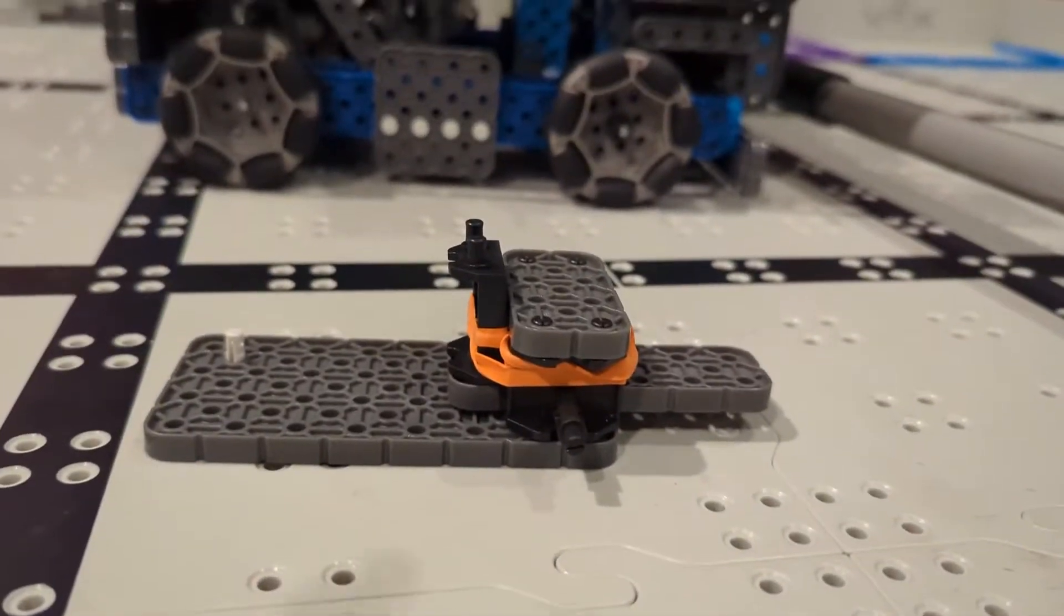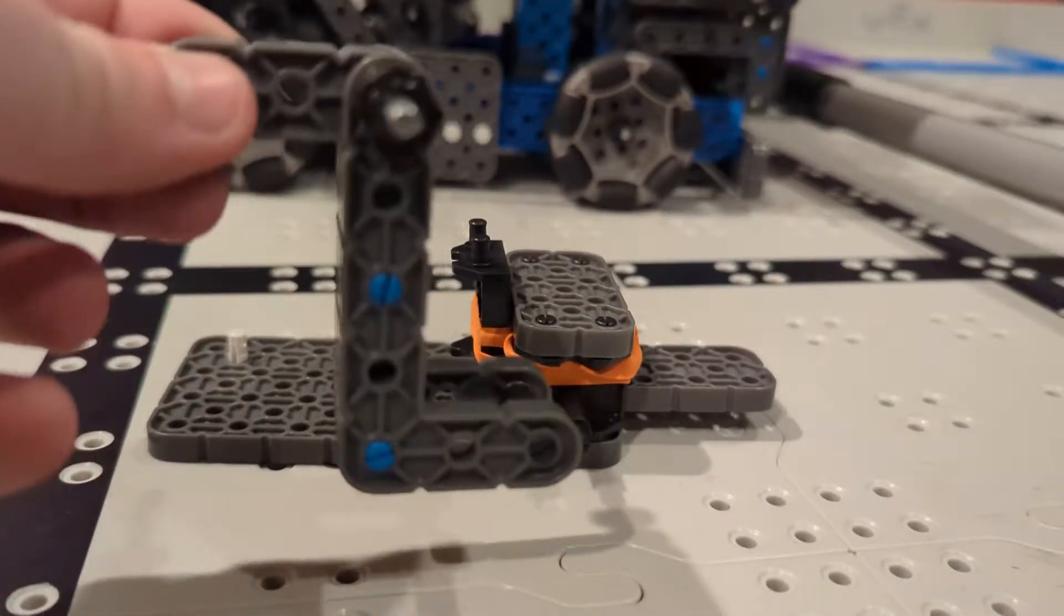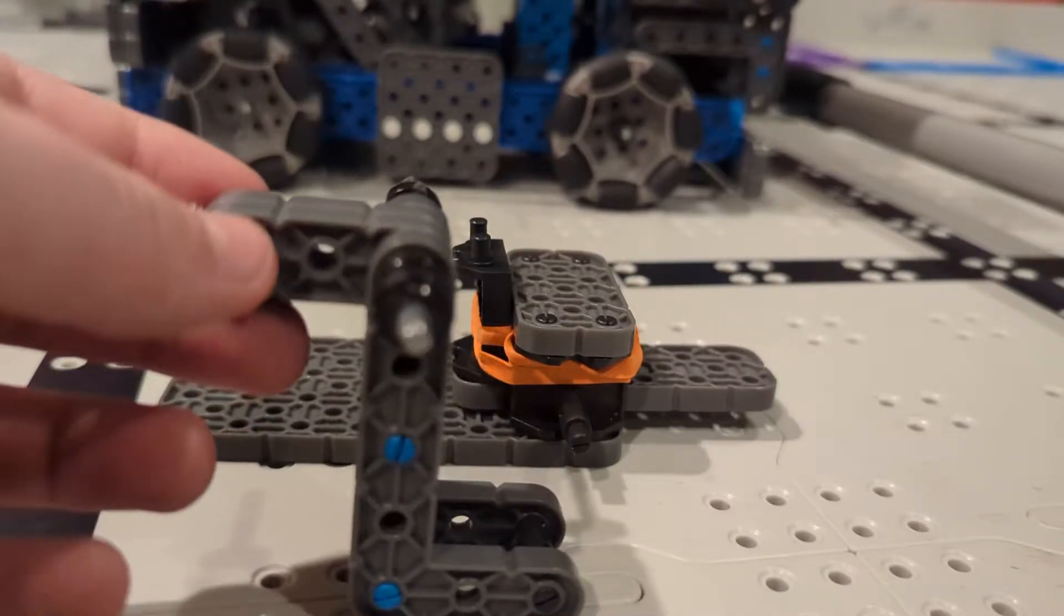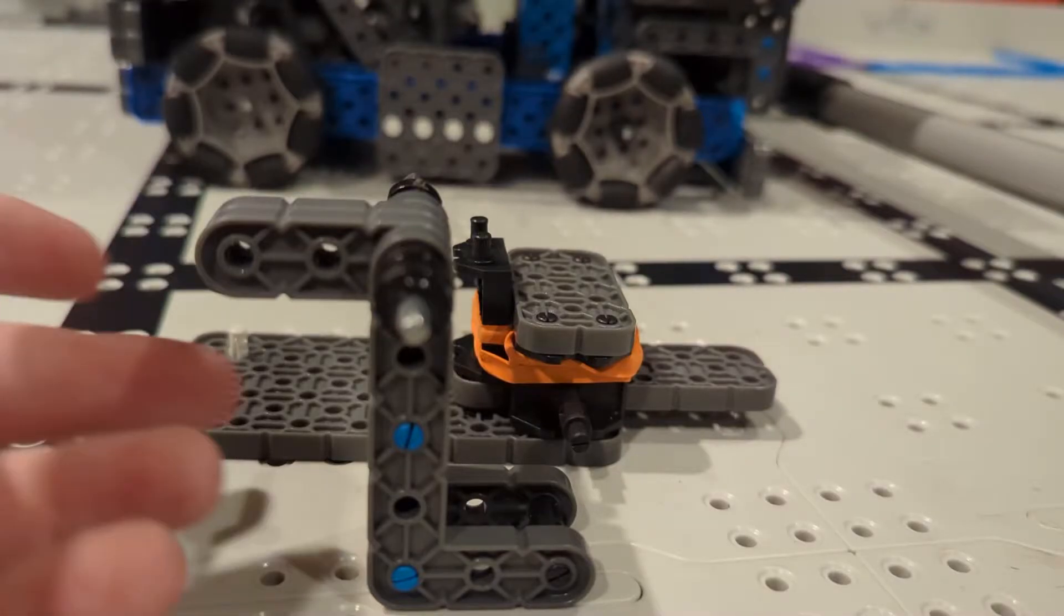So the problem with our old one, which looked like this—we have a video on it if you want to see it—was that it was very slow and pretty inconsistent whenever you're shooting the pucks. It also didn't shoot them very far.